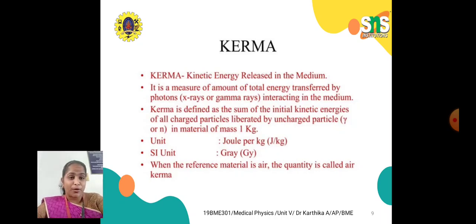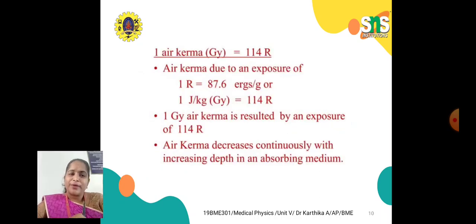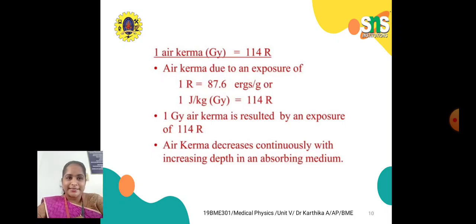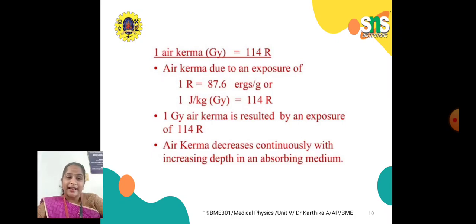When the reference material is air, the quantity is called air kerma. 1 air kerma equals 114 R, where 1 R equals 87.6 ergs per gram, or 1 Joule per kilogram (Gray) equals 114 R. One Gray of air kerma results from an exposure of 114 R, and air kerma decreases continuously with increasing depth in the absorbing medium.